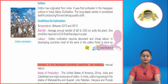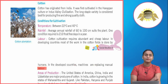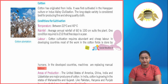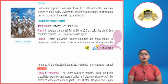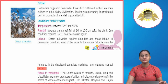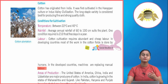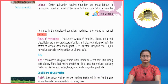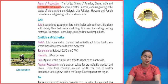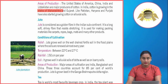In developing countries, most of the work in cotton fields is done by humans. In developed countries, machines are replacing manual labor. Areas of production: The USA, China, India and Uzbekistan are major producers of cotton. In India, cotton is grown in the states of Maharashtra and Gujarat. Haryana and Punjab have also started growing cotton on alluvial soils.